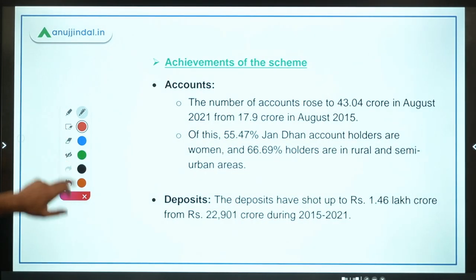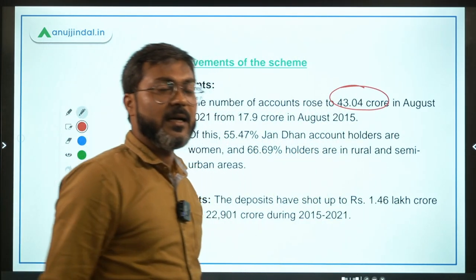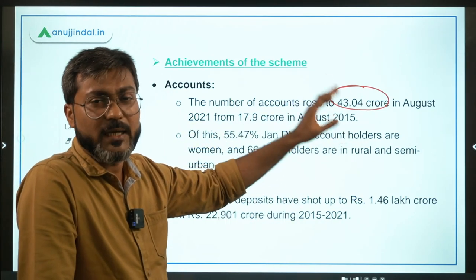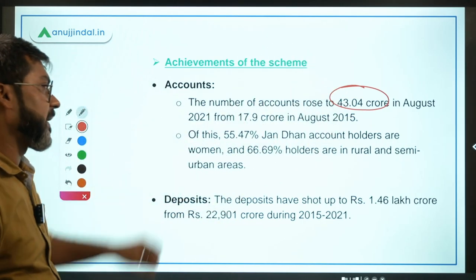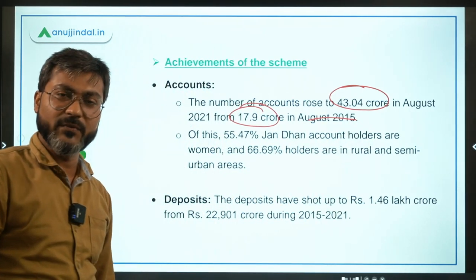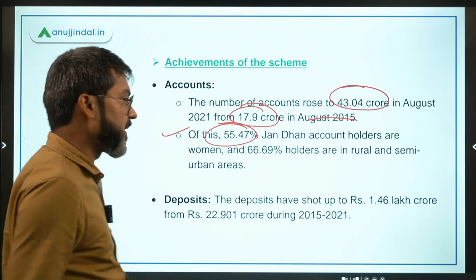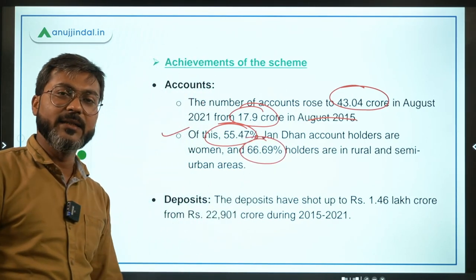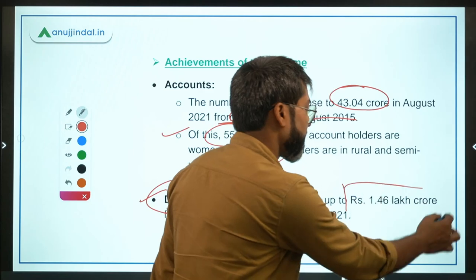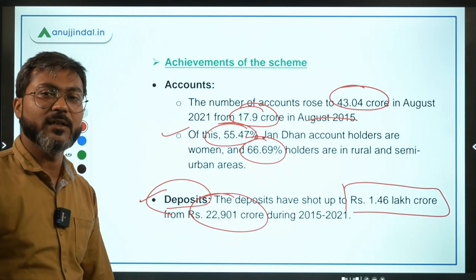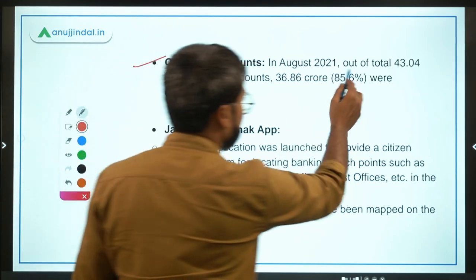As of August 2021, 43.04 crore Jan Dhan accounts are in operation. Of the women beneficiaries, 66.69 percent of account holders are in rural areas. The total deposits in the banking sector under this scheme have grown to 1.46 lakh crore, compared to just 22,901 crore in 2015. There are 85.6 percent operative accounts under this scheme.